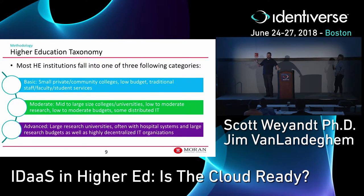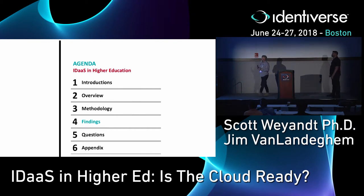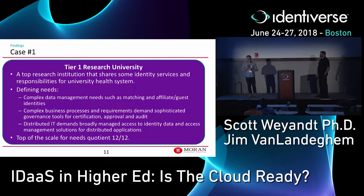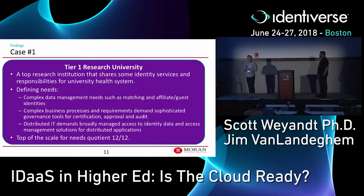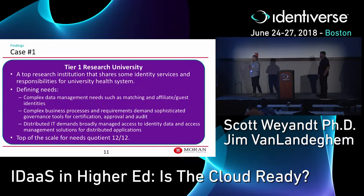Now that we understand how vendor functionality fits into higher education and how institutions have different needs, I'll hand it to Scott to talk about findings. The first use case is a Tier 1 research university ranked in the top 30 institutions in the country for research budget, also a top 30 ranked undergraduate program, with a health system attached. Central IT is at least partially responsible for identity and access management for that health system as well as the traditional campus and research.